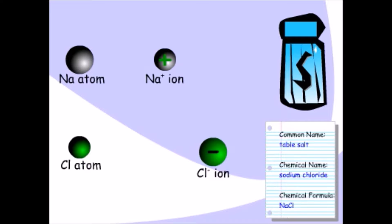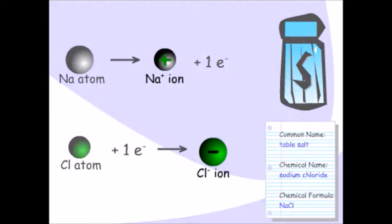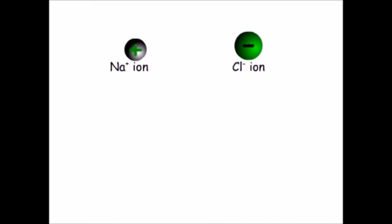Ions are electrically charged particles. Sodium atoms donate an electron to become sodium ions, and chlorine atoms accept an electron to become chloride ions. But what makes sodium atoms want to donate an electron to become positively charged? And why does chlorine accept an electron to become negatively charged?